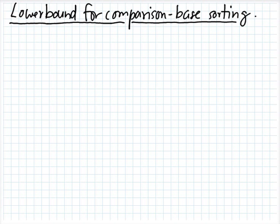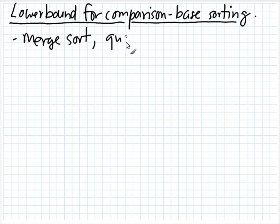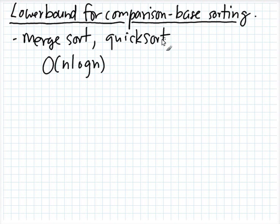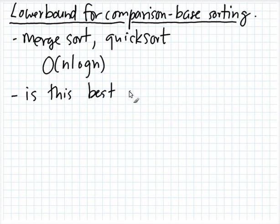In this clip we will talk about lower bounds for comparison-based sorting. We have learned two algorithms for sorting: merge sort and quick sort, and both of them run in time O(N log N). In the worst case for merge sort, and for randomized quick sort the expected running time is N log N. So the question is: is this the best possible? In this clip we'll try to answer this question.